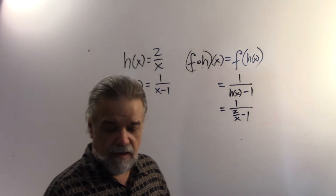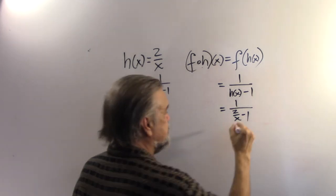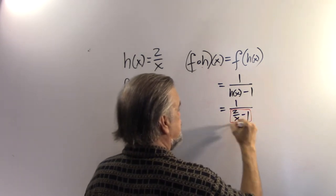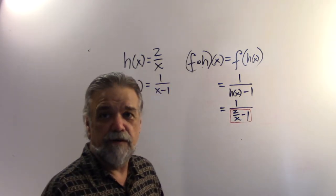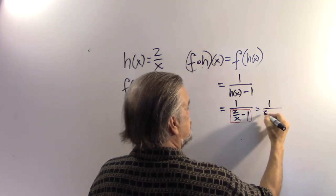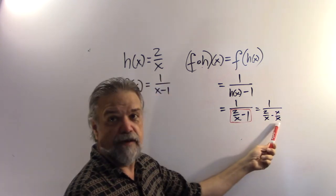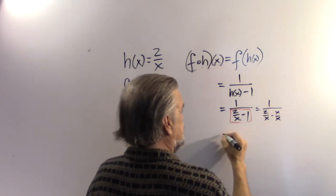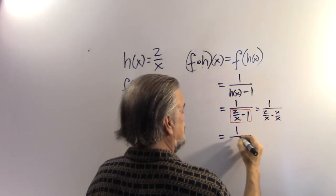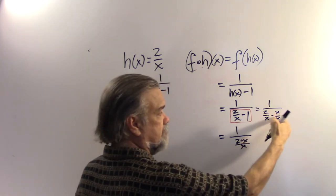Bleh! I hate seeing fractions inside of my fractions. So what I'm going to do is I'm going to look at this denominator right here, and I'm going to get a common denominator for it. So I'm going to say this is 1 over 2 over x minus x over x. I'm just renaming 1, x over x. And this is 1 over 2 minus x over x, combining my fractions.